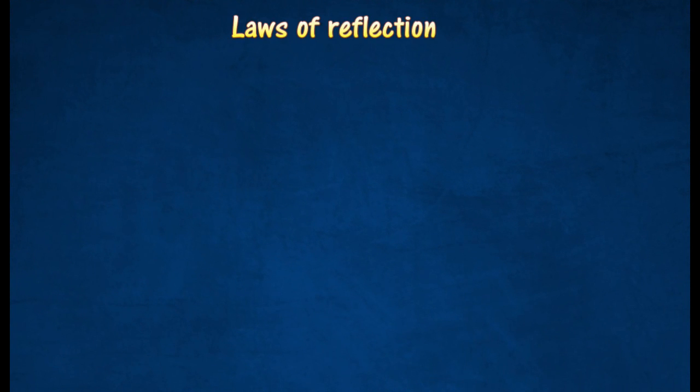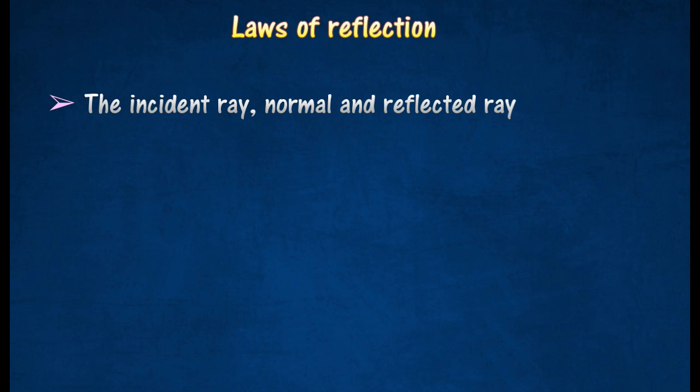The law of reflection states that the incident ray, the normal, and the reflected ray at the point of incidence all lie on the same plane, and the angle of incidence I is equal to the angle of reflection R.